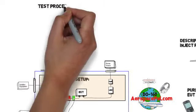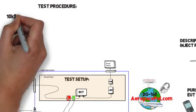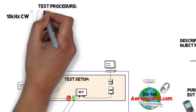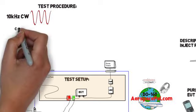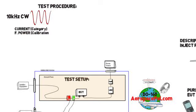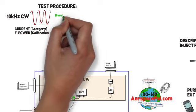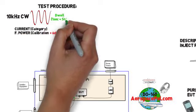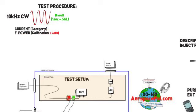The testing house will start by injecting a 10kHz continuous wave signal on the first bundle and monitor the current level specified by your category and the power level specified by your calibration. Once one of the two levels is achieved they will hold for a minimum dwell time. This dwell time should be determined by your system response time.